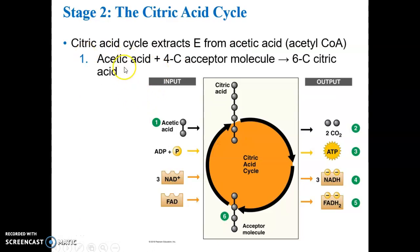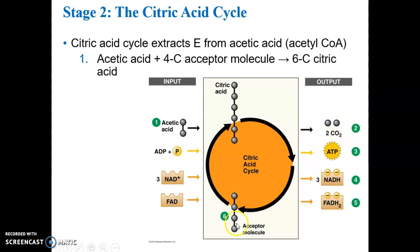The acetic acid and the four-carbon acceptor molecule within the citric acid cycle form the six-carbon citric acid, and that's what cycles through. You start out with six carbons, and notice two carbon dioxides are kicked out. The four-carbon acceptor molecule cycles back and is ready to latch on to yet another acetic acid, and the cycle continues as long as glucose is being broken down in glycolysis.